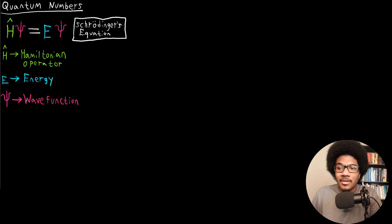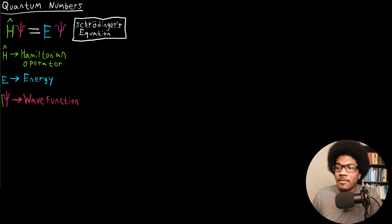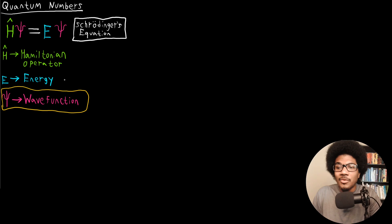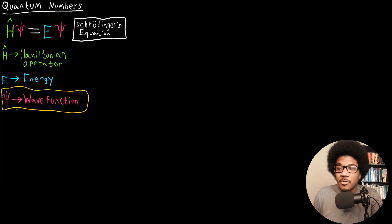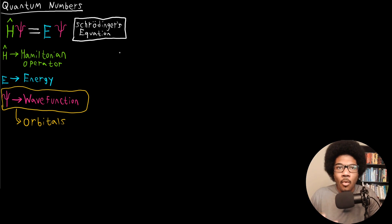The big piece of Schrödinger's equation is what's known as the wave function. The wave function is really the solutions of Schrödinger's equation, and what it does is give you insight into the position and location of your electron. We actually refer to these solutions of Schrödinger's equation — these wave functions — as orbitals. The whole goal of quantum numbers is to provide an easy label to these orbitals that we get from Schrödinger's equation.